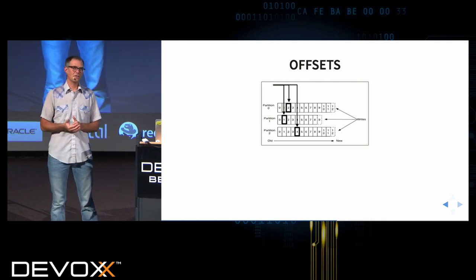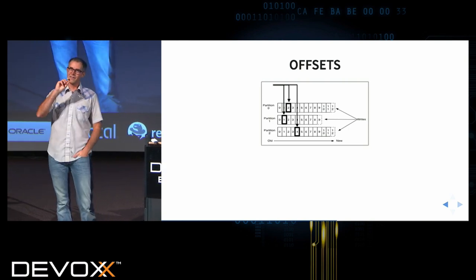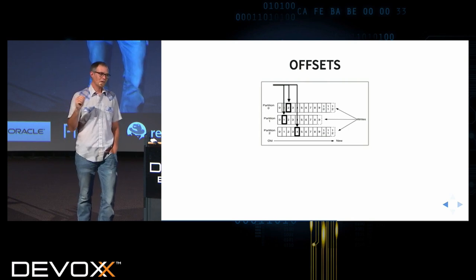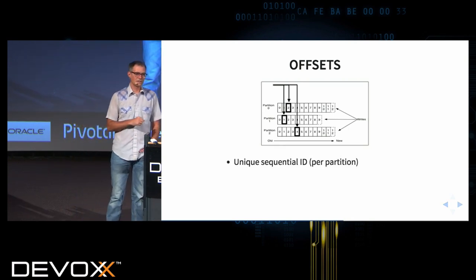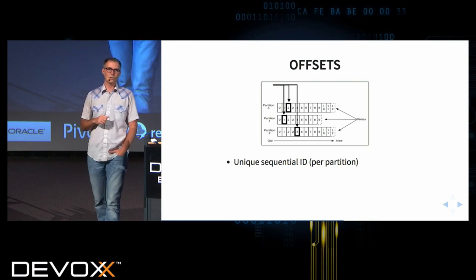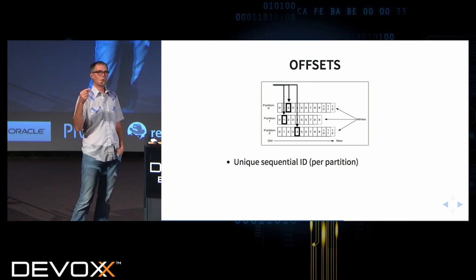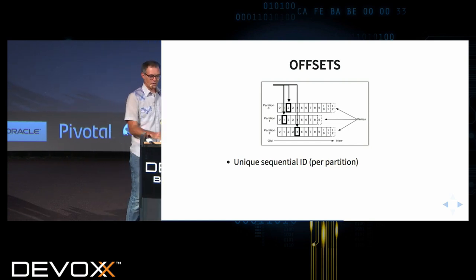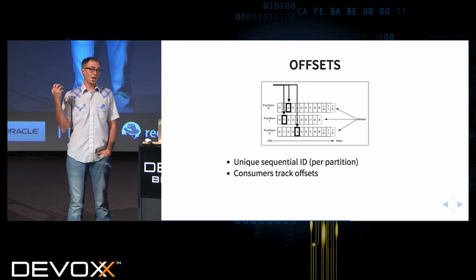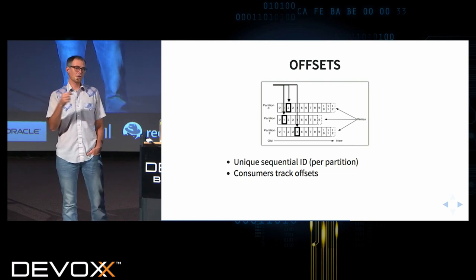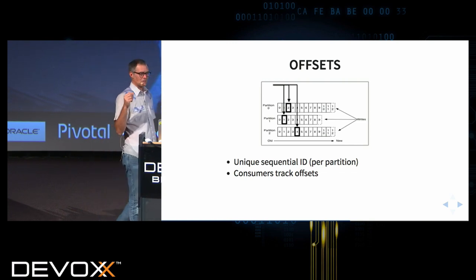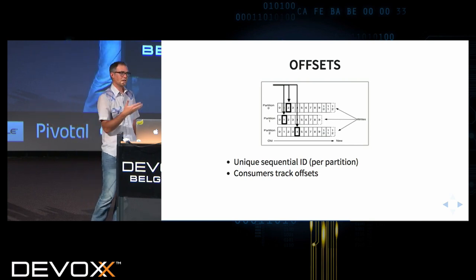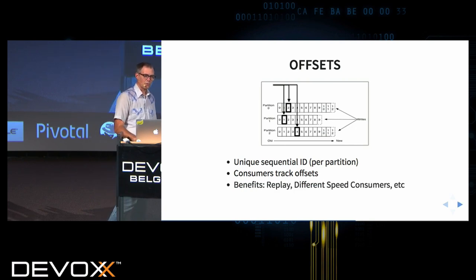You'll have seen numbers in the messages in these images — those are what Kafka calls offsets. Every message has an offset value, and those are unique sequential IDs per partition. As messages come into a partition, they're assigned the next unique sequential ID. The offsets are only unique within a single partition — the same offset IDs would exist in other partitions too. So ordering is only guaranteed within a single partition.